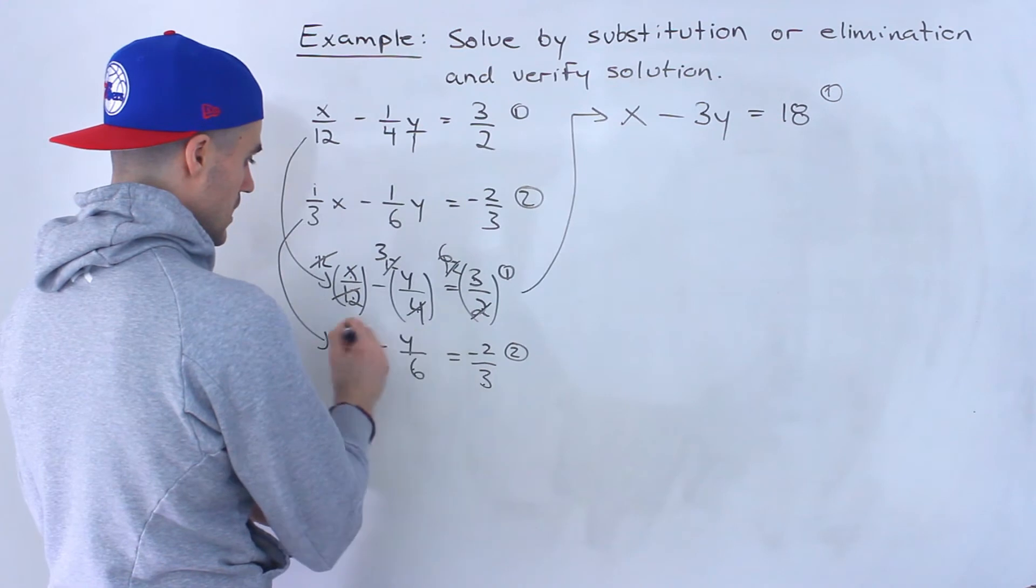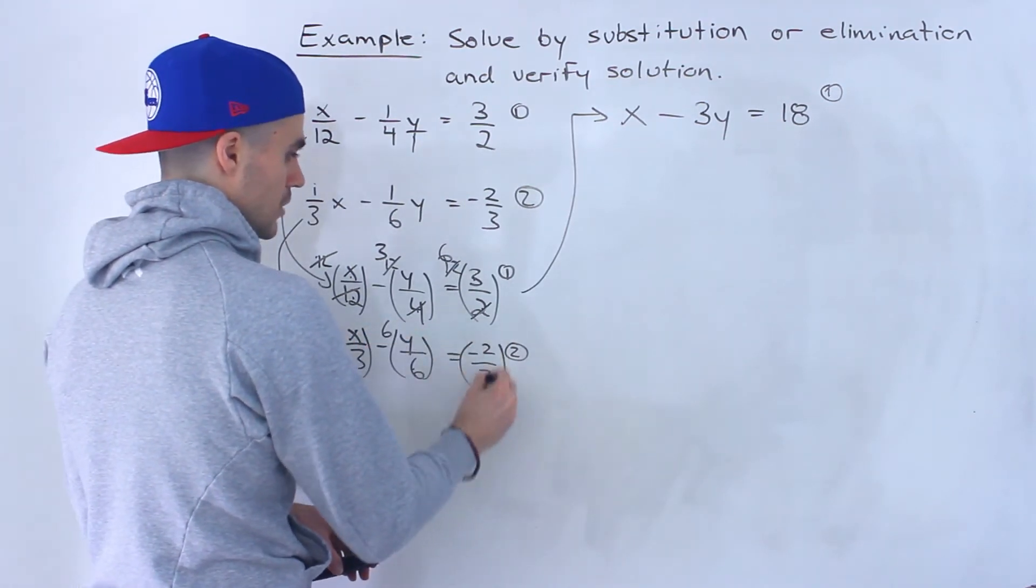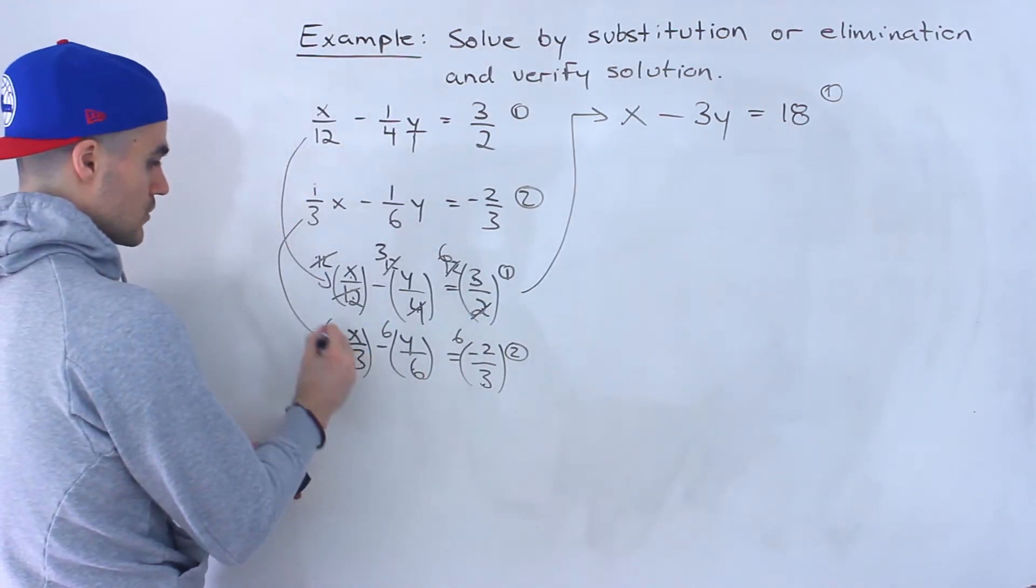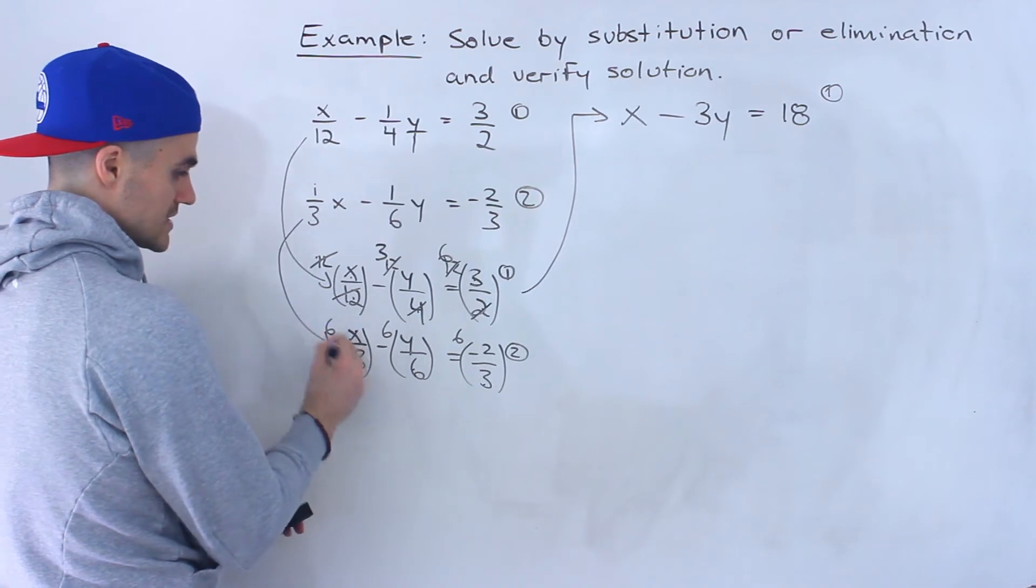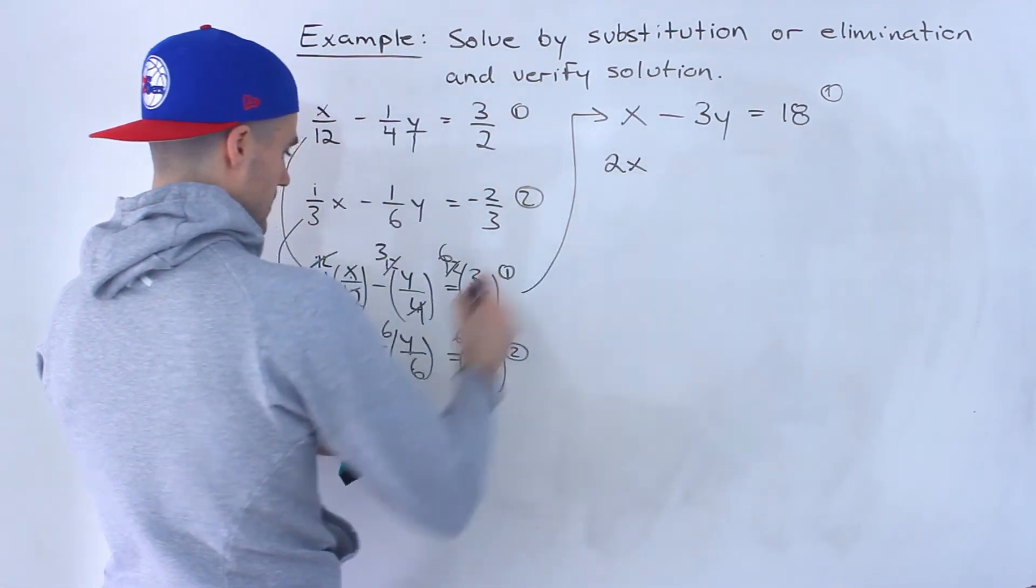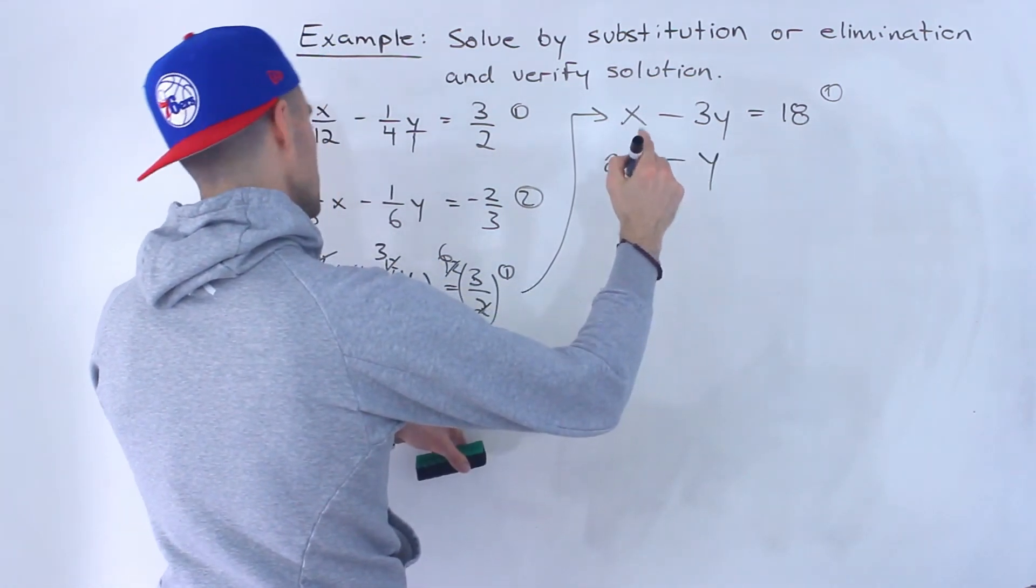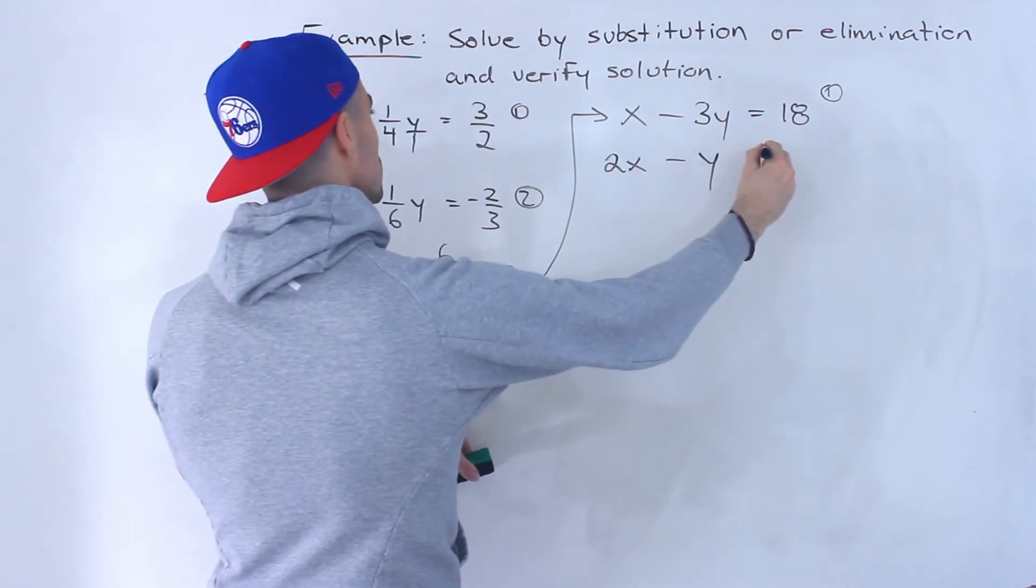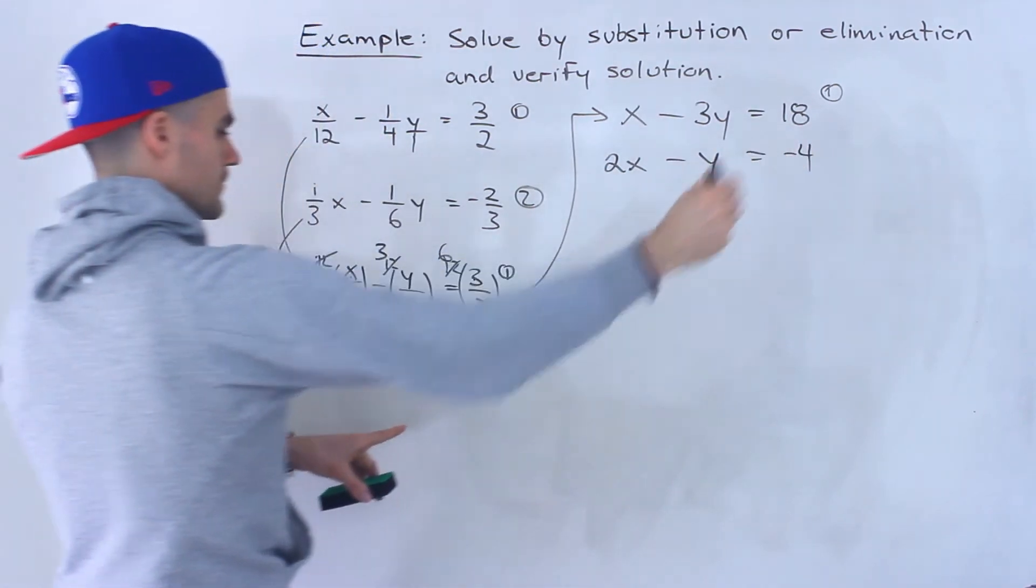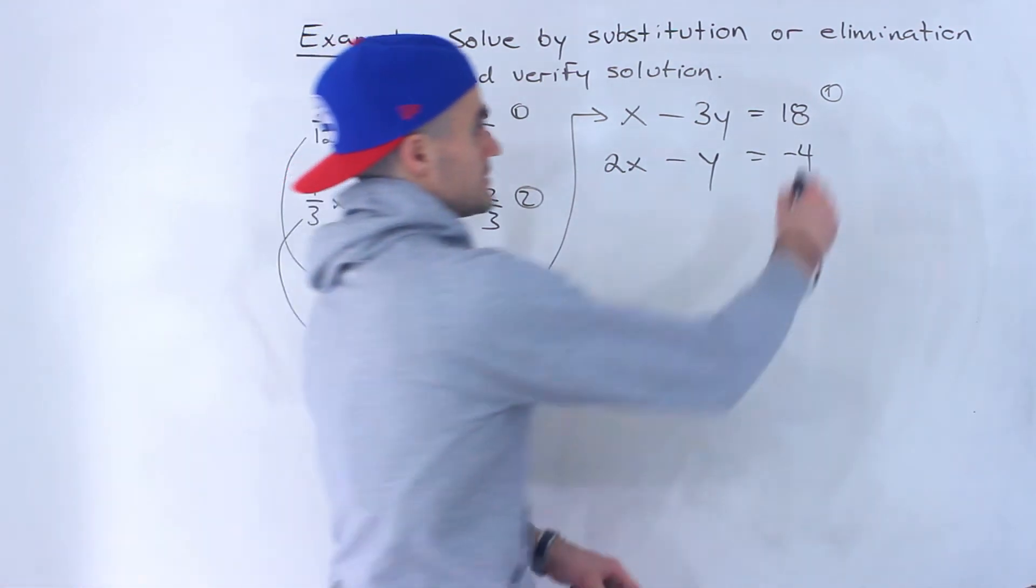So notice 3, 6, and 3, lowest common denominator is 6 between everything. You got to multiply everything on the left side and the right side by that lowest common denominator. So 3 goes into 6 twice. 6 divided by 3 is 2. So that would be 2x. 6 divided by 6 is 1 so we'd have minus y. 6 divided by 3 is 2 times negative 2. Give us negative 4. Like that. So this would be line 2.